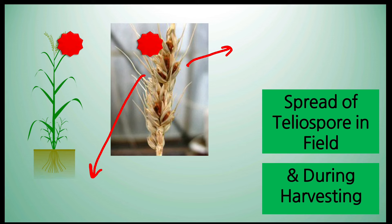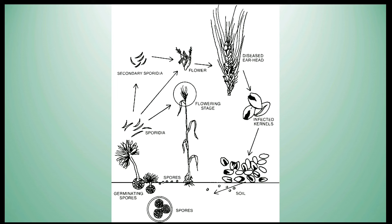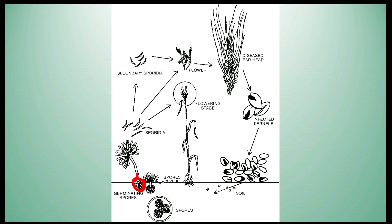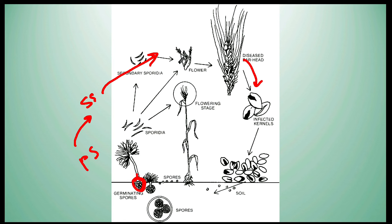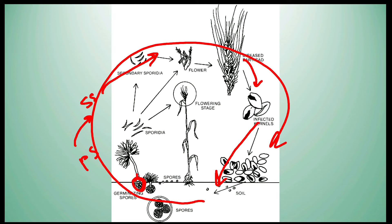To summarize: pathogen survives in infected seeds and soil → wheat cultivation and germination → plant growth and flowering → teliospore germination → primary sporidia → secondary sporidia → infect flowers → dikaryotic mycelium infects grains → infected grains at harvest contaminate other grains or soil → cycle continues. This was the disease cycle of Karnal bunt.